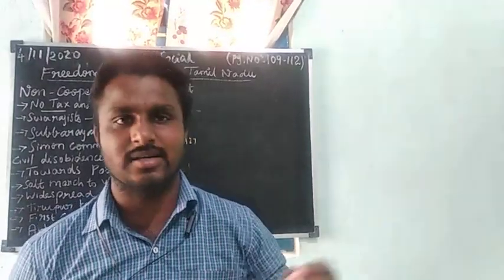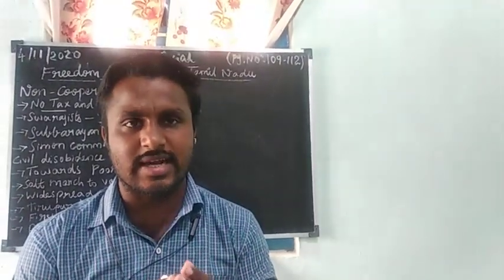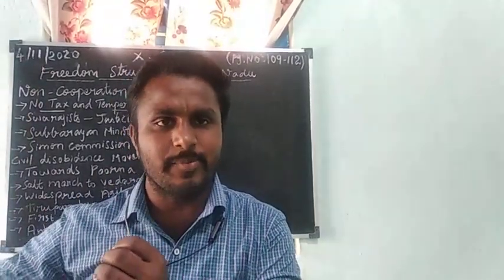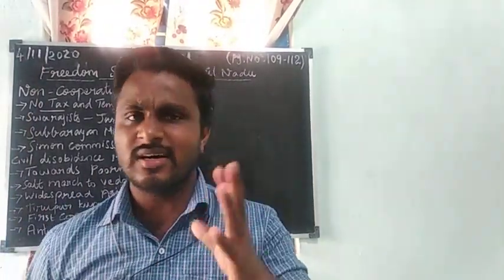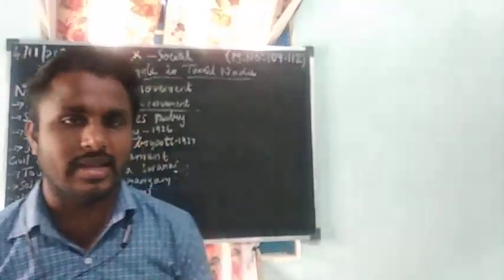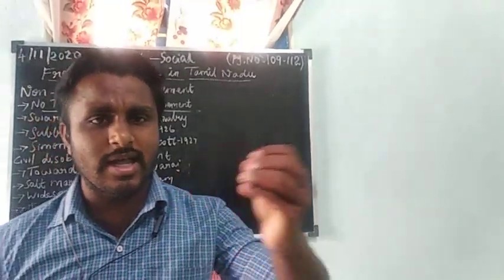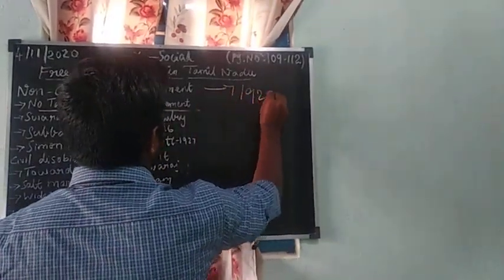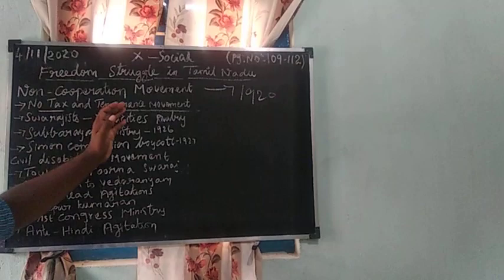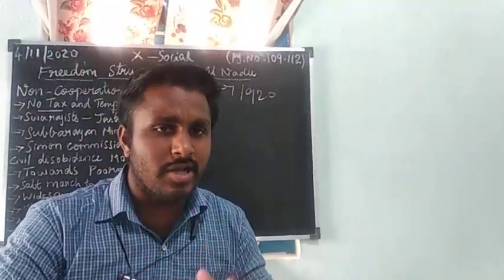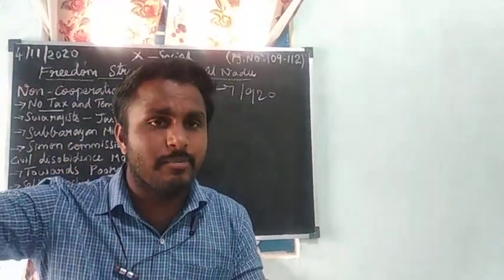The non-cooperation movement began after the introduction of the Rowlatt Act. What is the Rowlatt Act? Without any warrant they could suddenly arrest Indian people and Indian leaders. It was introduced by Rowlatt in 1919. Next, after the Jallianwala Bagh massacre, Gandhiji introduced the non-cooperation movement in 1920.